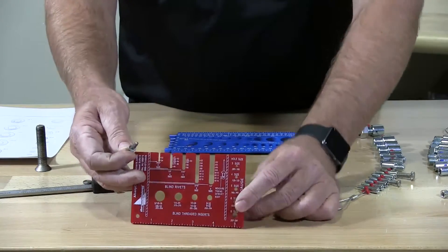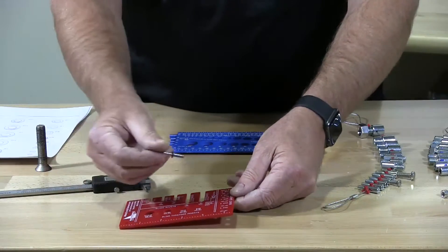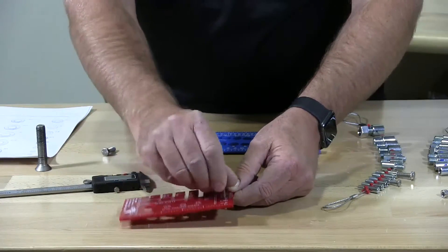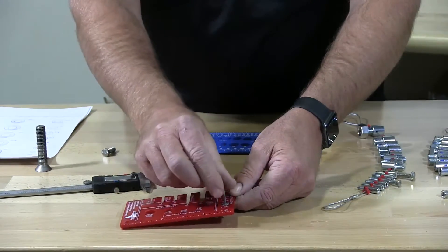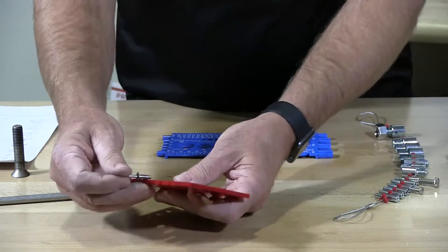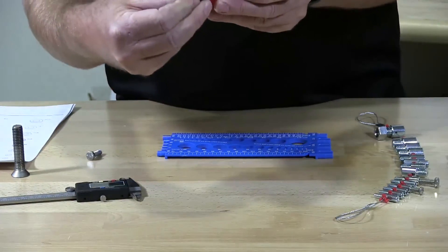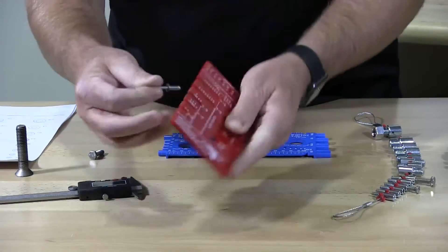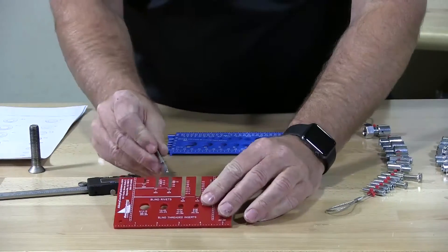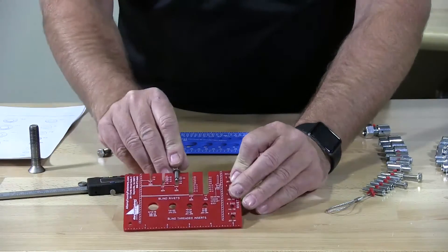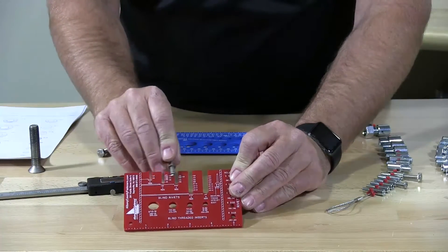Here I have a rivet. I'm going to find what size it is. It's not a 5. So this is a number 6 and the length is a 64. So you find the diameter, you find the length, the slot that it fits into.